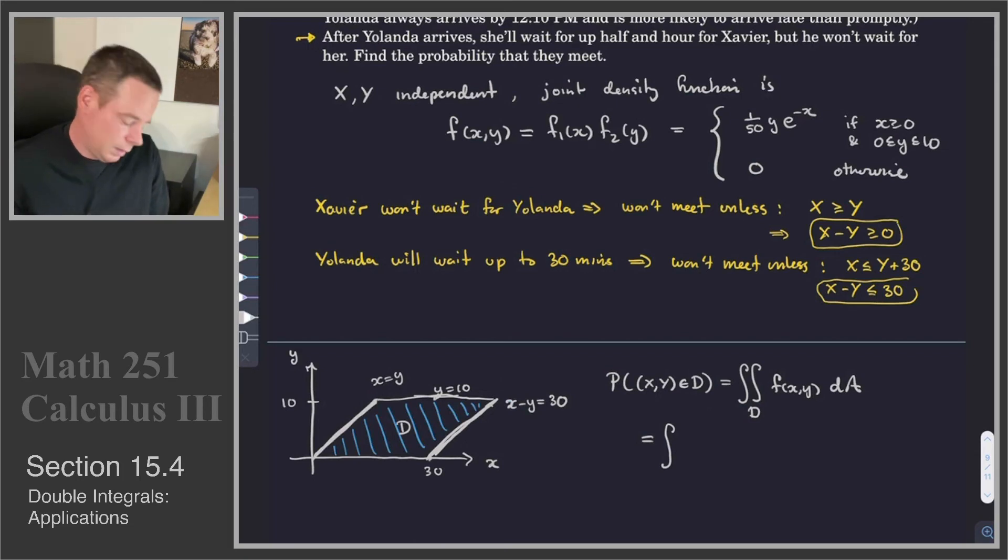Horizontally simple or vertically simple? When I look at this, if I start drawing vertical lines, the upper curve is going to change from X equals Y to Y equals 10. But if I draw a horizontal line, I have a left curve and a right curve and those don't change. So that means I should integrate with respect to X first.